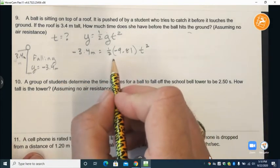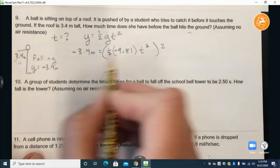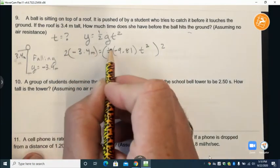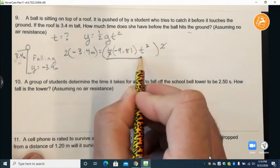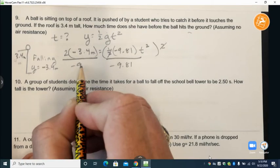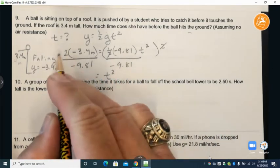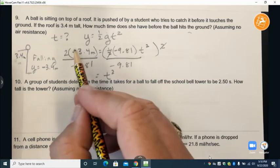So now we'll multiply this expression times 2 to get rid of that one-half, divided by negative 9.81, and so t squared equals this expression here and so that negative goes away.